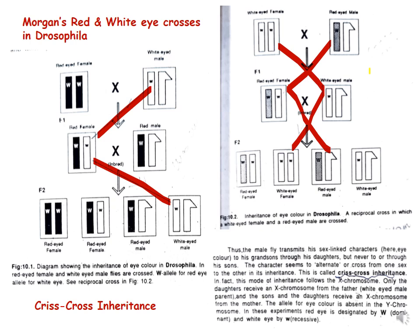In the reciprocal cross shown in figure 10.2, a white-eyed female is crossed to a red-eyed male. The dominant W allele for red eye is present in the male. In F1, there is an equal proportion of red-eyed females to white-eyed males. The red-eyed females are heterozygous with dominant W and recessive w. When these F1 individuals are crossed, the F2 produces four kinds of progeny: females are both red-eyed and white-eyed, and similarly males are both red-eyed and white-eyed.